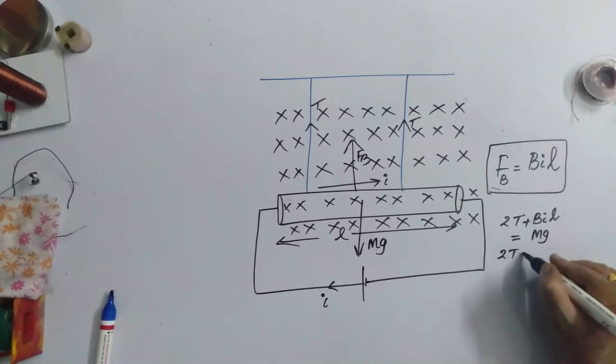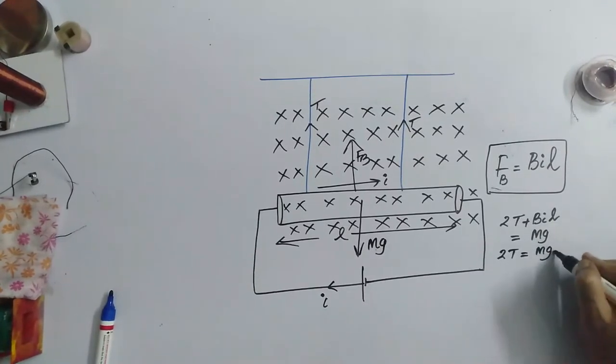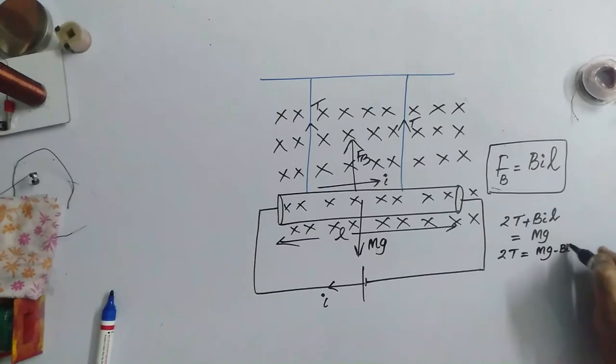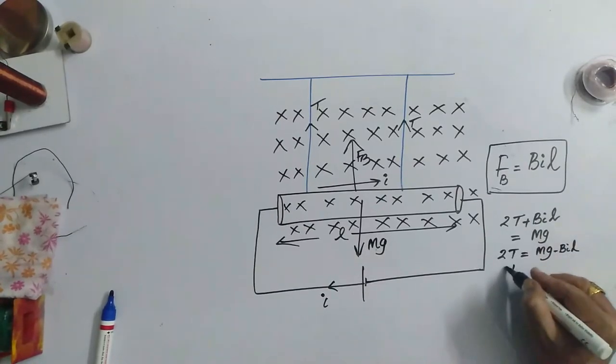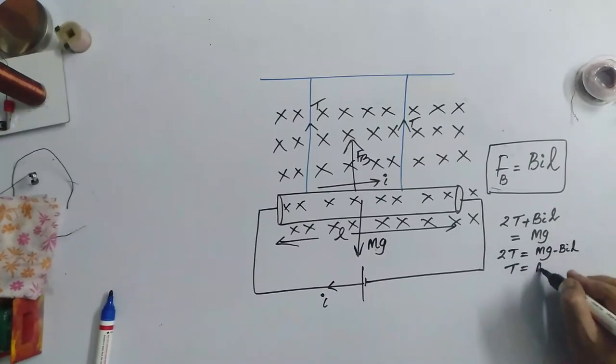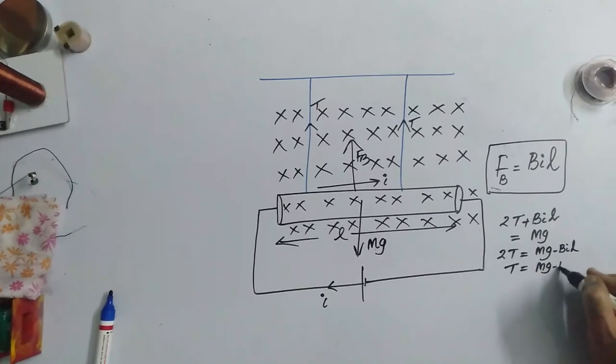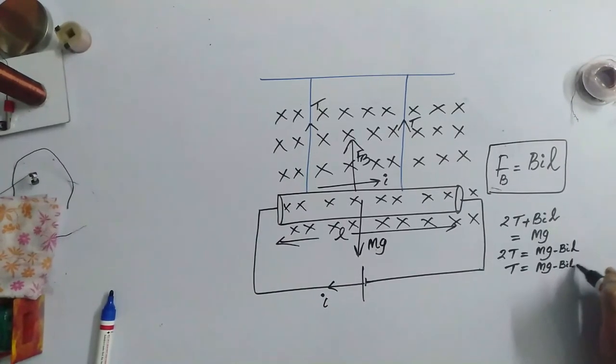Therefore, 2T is equal to M G minus B I L. And, tension in individual string will be M G minus B I L by 2.